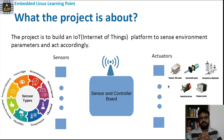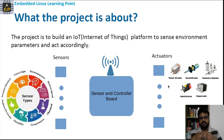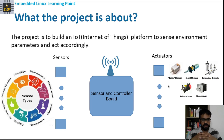What does environment parameters mean? It could be temperature, it could be humidity, chemical, it could be any electromagnetic radiation. It could be motion or speed. These are the typical parameters that we can measure. For that we use sensors and those sensors we have to interface with the IoT system.